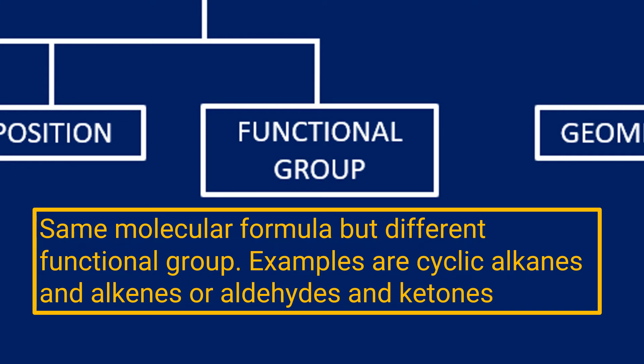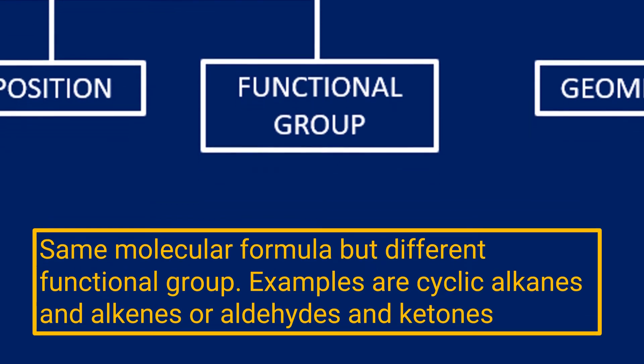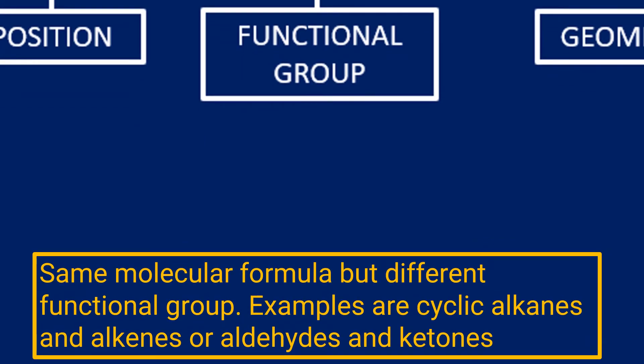Functional group isomerism then: we have the same molecular formula this time, but the functional group is different. These are quite rare, and we're going to look at two examples: cyclic alkanes and alkenes, and aldehydes and ketones. First example: a cyclic alkane. If I draw cyclohexane, that is in fact C6H12. Or if I draw hexene, they are both C6H12. However, the one on the left is classed as a cyclic alkane and has similar chemical properties to alkanes. The one on the right is an alkene and it has properties of alkenes.